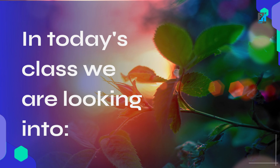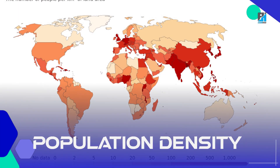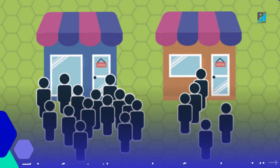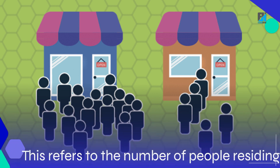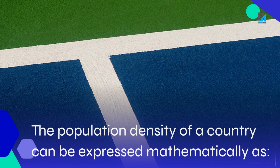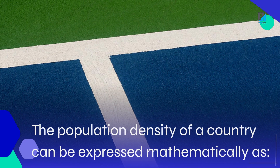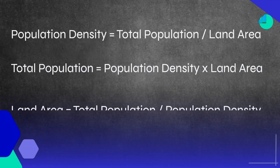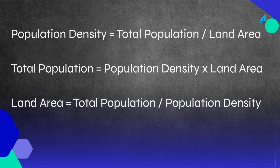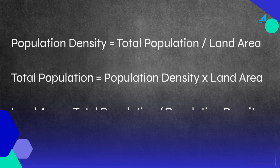In today's class we are looking into population density. This refers to the number of people residing per square kilometer of the geographical land area of the country. The population density of a country can be expressed mathematically as: population density equals total population divided by land area; total population equals population density multiplied by land area; land area equals total population divided by population density.